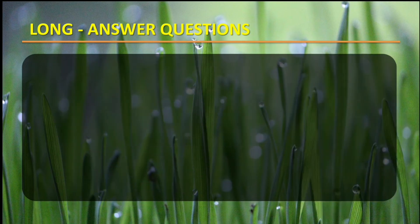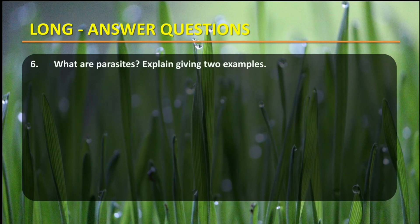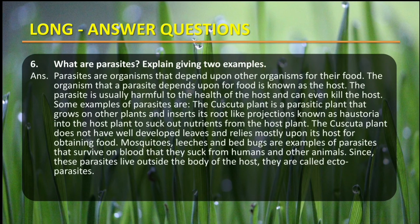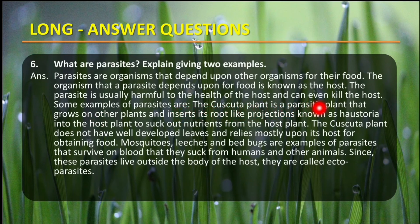The last question: What are parasites? Explain giving two examples. Parasites are organisms that depend upon other organisms for their food. The organism that a parasite depends upon for food is known as the host. The parasite is usually harmful to the health of the host and can even kill the host. One example is the cuscutta plant, a parasitic plant that grows on other plants and inserts its root-like projections into the host plant to suck out the nutrients.